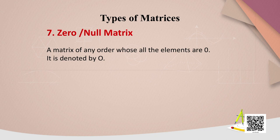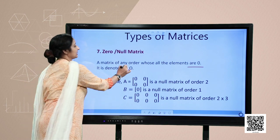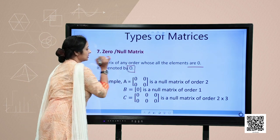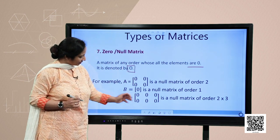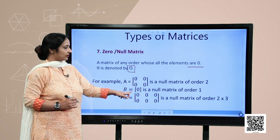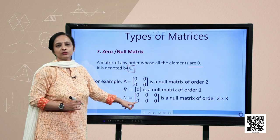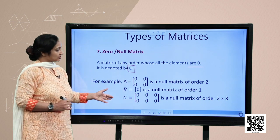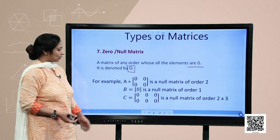The next type is the zero matrix, also known as the null matrix. A matrix of any order whose elements are all 0 is known as a null matrix or zero matrix. It is denoted by capital O. There are examples of null matrices of different orders — order 2, order 1, and order 2×3 — depending on the situation and question.